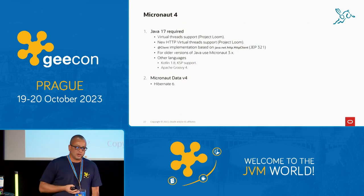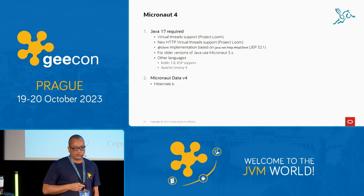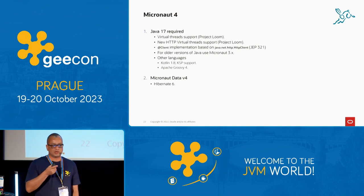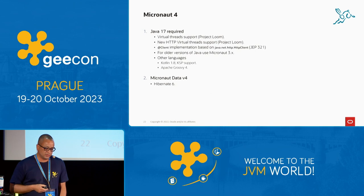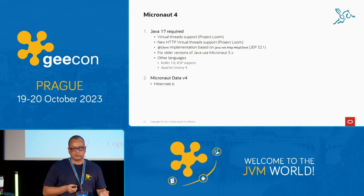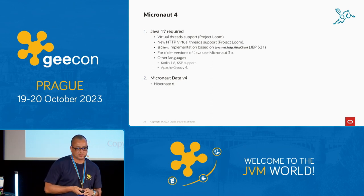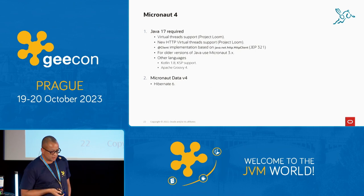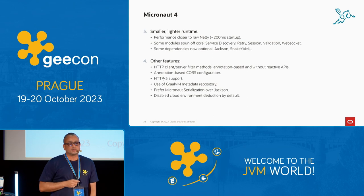With Micronaut 4, Java 17 is required, and virtual threads are supported by default. There's new HTTP virtual-threads support and an implementation based on the java.net.http HTTP client. Version 3.x is still available for legacy projects. Kotlin 1.8 support, Groovy support, and Micronaut Data 4 with support for Hibernate 6 as the default implementation behind the scenes.